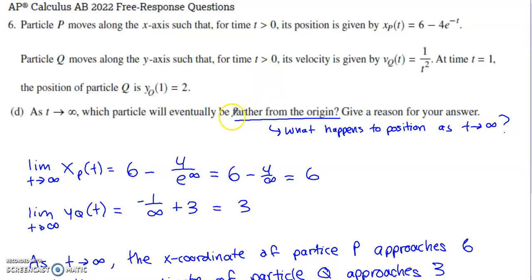We have to consider this as time approaches infinity. We want to know what happens to the position of each particle as time goes to infinity. If you check the limit of the position function for particle P as time approaches infinity, you can think of this as 4 over e to the t and then put infinity in place of t.